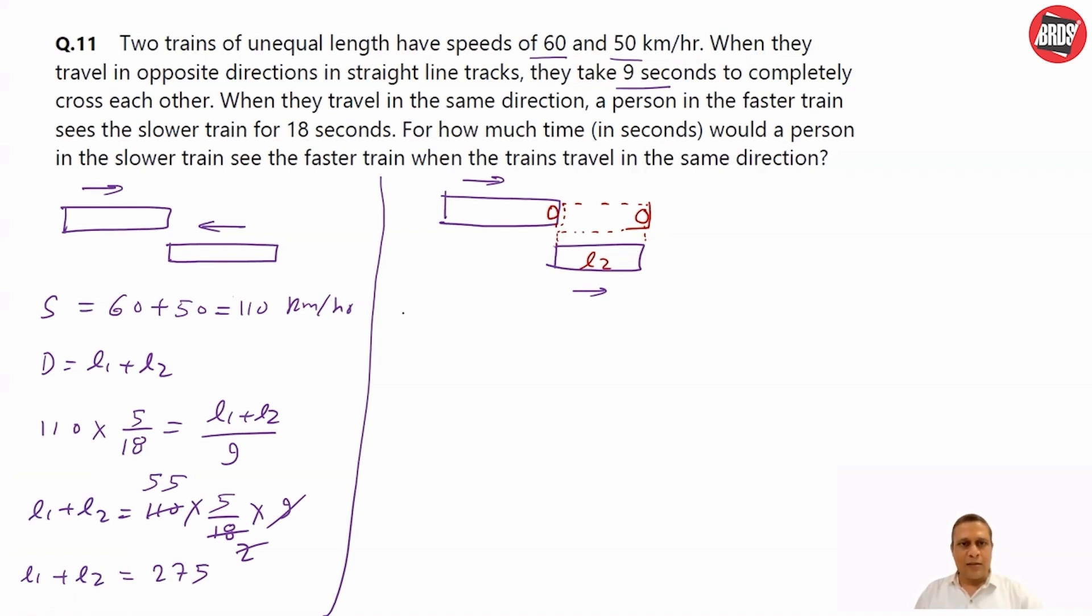In this case distance is L2. Speed will be 60 minus 50, relative speed 10 kilometers per hour. And time they have given 18 seconds. Again, we use the same thing. Speed is distance upon time. Distance is L2. Speed is 10, you convert into meter per second 5 by 18. Time 18. So, you can cancel this out. So, L2 is 50.